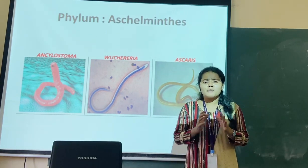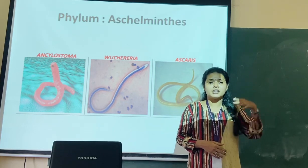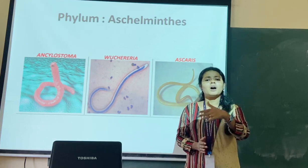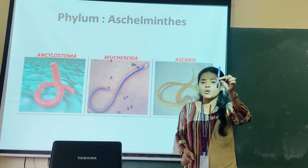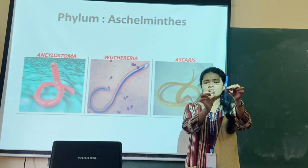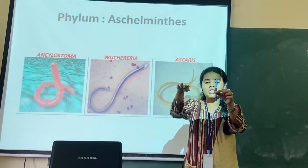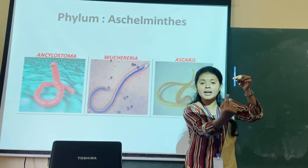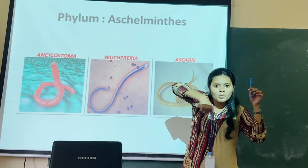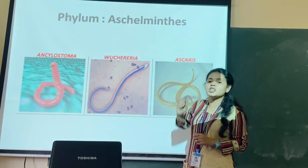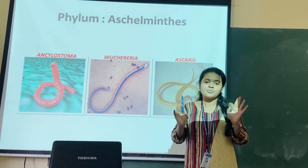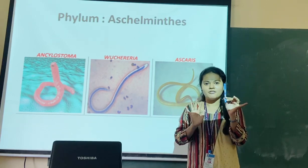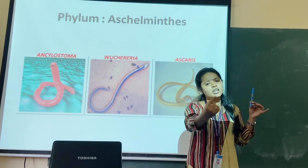Just as we discussed common names of organisms belonging to phyla like Platyhelminthes and Ctenophora, here the organisms are commonly called as roundworms. Why are they called roundworms? When you take the transverse section of an organism belonging to phylum Aschelminthes, you will get a circular outline. Because of that reason, they are referred to as roundworms.